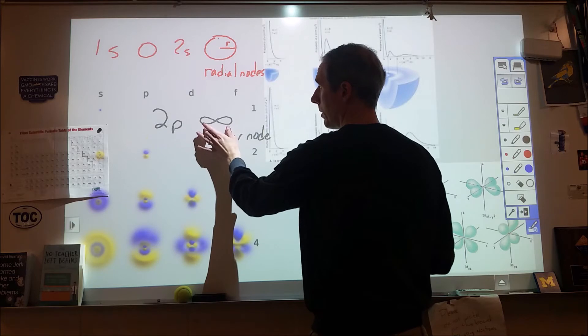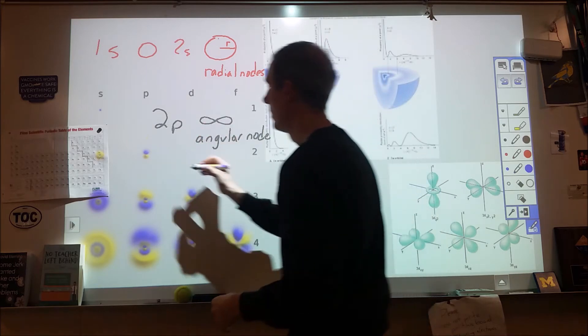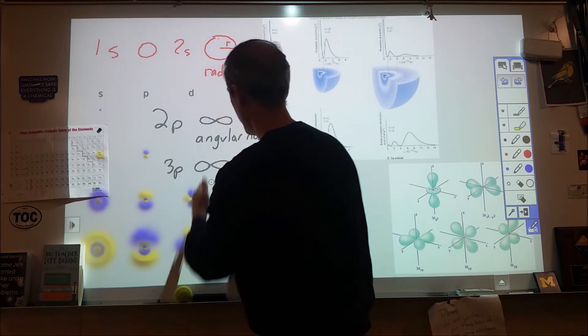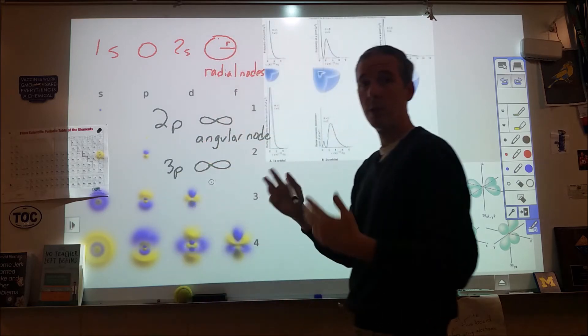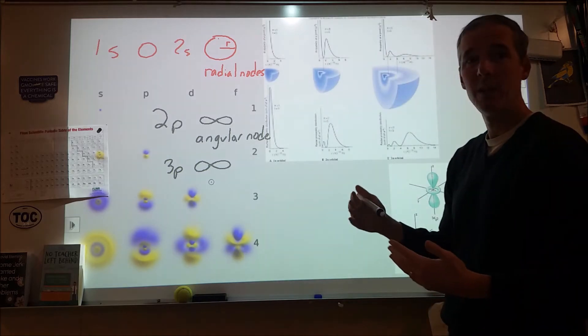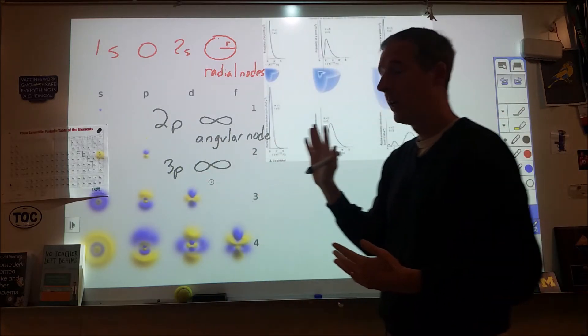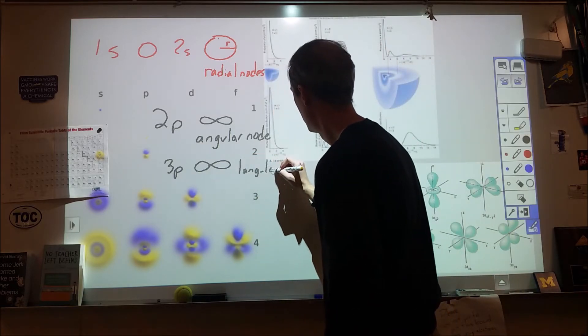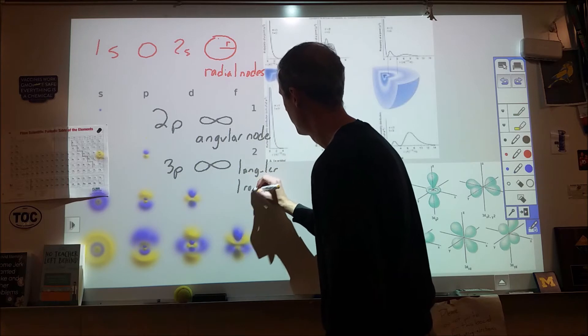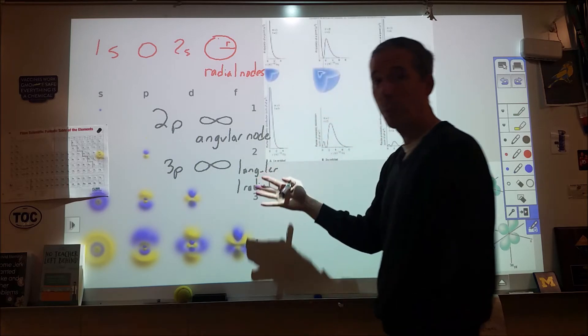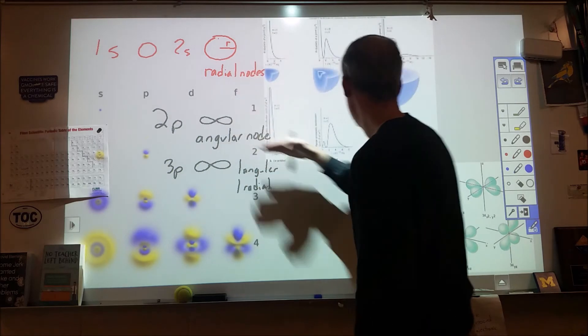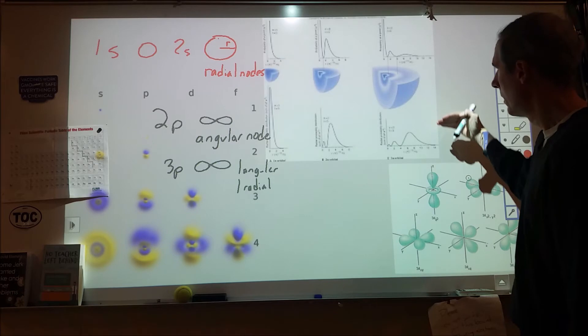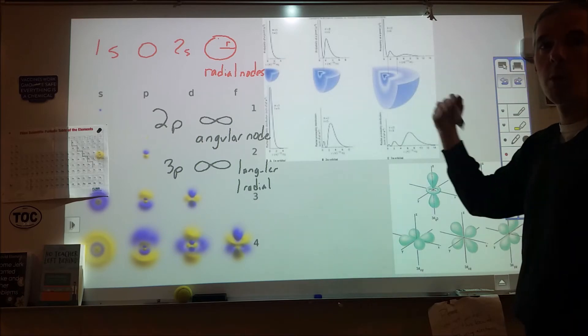So s orbitals have zero angular nodes, p orbitals have one, d orbitals have two. And then from there, as we go up, we start to see more and more radial nodes. So 2p has one angular node and zero radial. A 3p orbital could be bigger, right? So we still have this angular node, but embedded in this picture that you can't see is also a radial node.